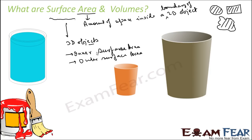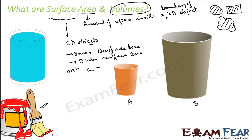Surface area is the area of a solid 3D object — it is a measure of the total area that the surface of an object occupies. It is typically used to find the cost of painting. For example, I have two glasses and I want to paint them red, and the cost of painting per square feet is the same — can you guess which glass, glass A or glass B, will cost more? Obviously glass B, because glass B has more surface area, so the cost of painting will be more. Surface area is measured in SI units: meter square, centimeter square, and so on.